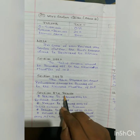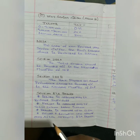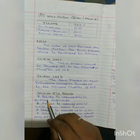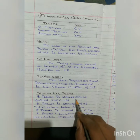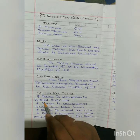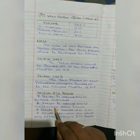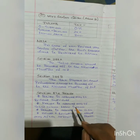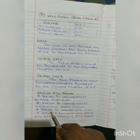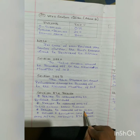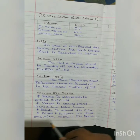Section 87A — Rebate. A rebate is essentially a discount. The conditions are: rebate is allowed only to a resident individual, and only if the total income is below 5 lakhs. Rebate is allowed up to a maximum of 12,500 rupees.